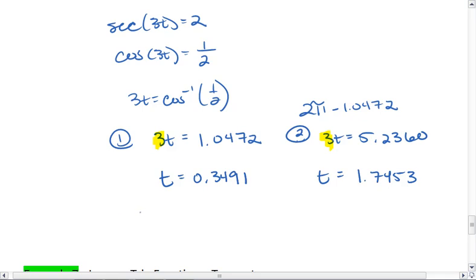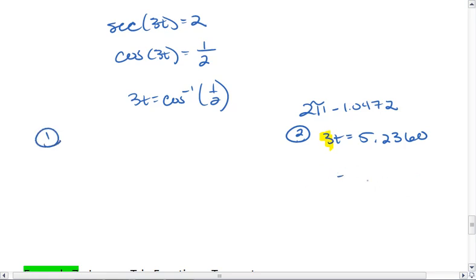So our possible solutions are t equals 0.3491. Oh, hold on, I want to backtrack a little bit first. Remember, both of these solutions are plus 2π times n. When we divide by 3, we have to divide the entire side by 3.